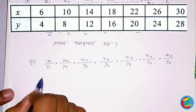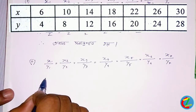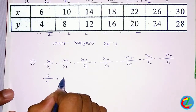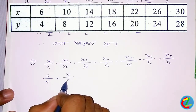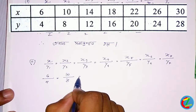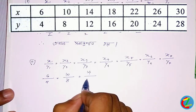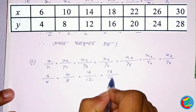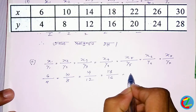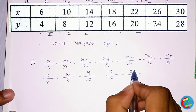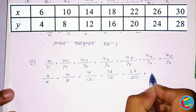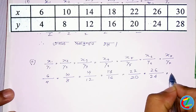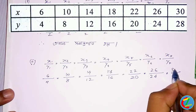Six divided by four, divided by three, three two seven four, ten divided by twelve, two thousand seven eight ten divided by sixteen, 22 divided by 20, number 12, 26 divided by 24.